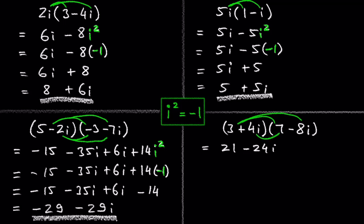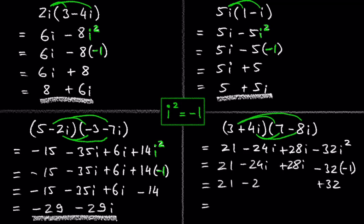For the second practice problem, 3 plus 4i times 7 minus 8i: 3 times 7 is 21, 3 times negative 8i is negative 24i, 4i times 7 is 28i, and 4i times negative 8i is negative 32i squared. Negative 32i squared is negative 32 times negative 1, which is positive 32.